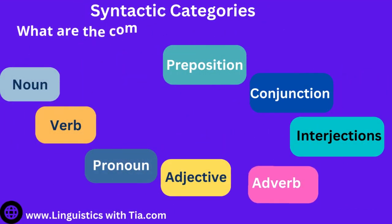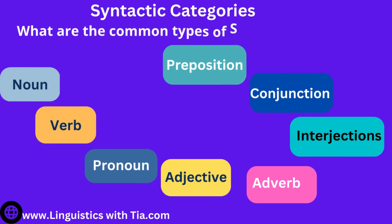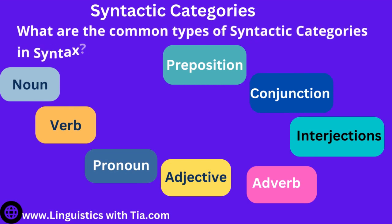Let's look at the common types of syntactic categories in syntax. We have nine syntactic categories based on the grammatical function of words in sentences or phrases. These are: noun, pronoun, verb, adverb, adjective, preposition, conjunction, and interjection. We will discuss all these categories in our next few slides.